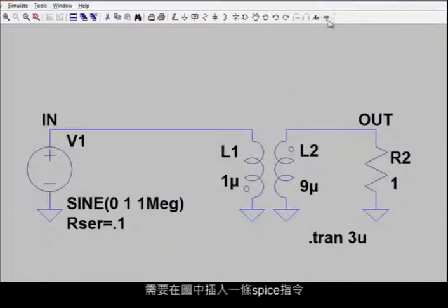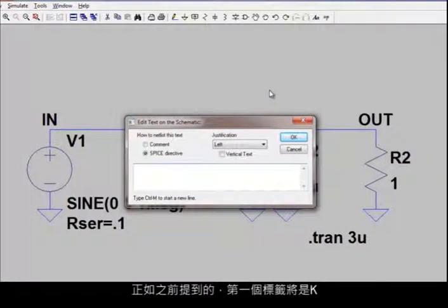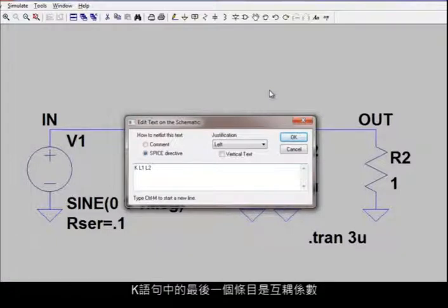To specify the mutual inductance ratio for the inductors we have defined, we need to insert a SPICE directive into our diagram. Let's click the .op command on the menu, and as I mentioned before, the first label on this new line will be K, and then we need to define the inductors that we're using to simulate the transformer, so L1 and in our case L2.